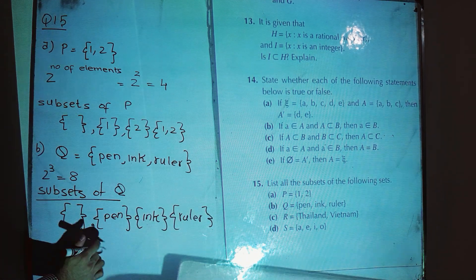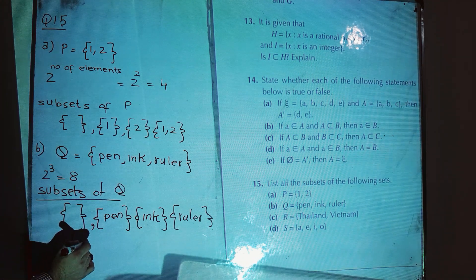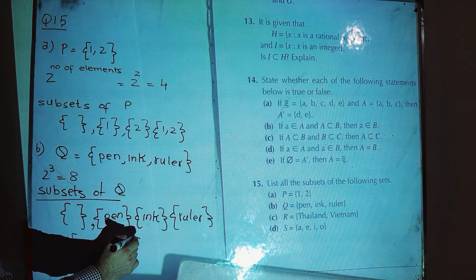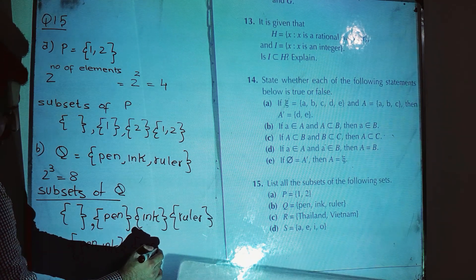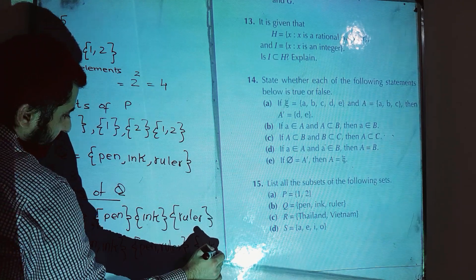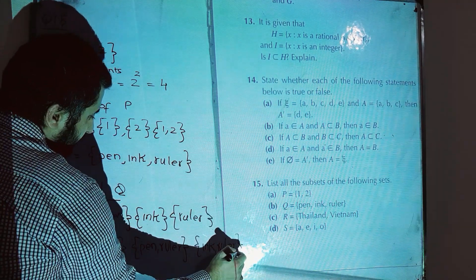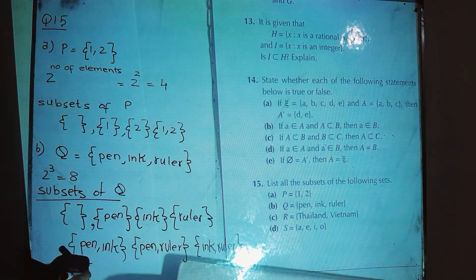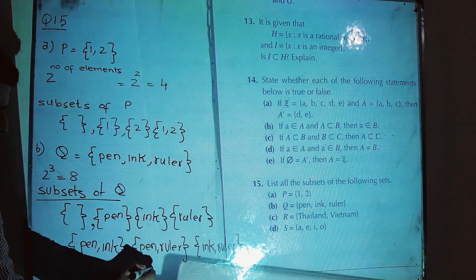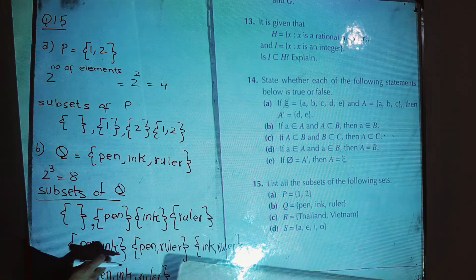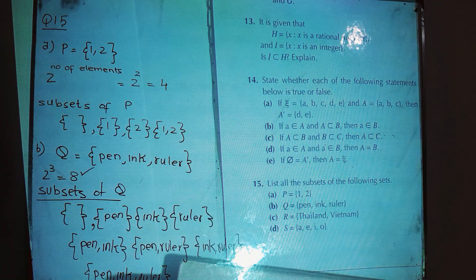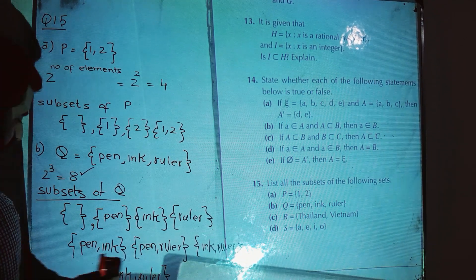Now write down the subsets with two elements — you are not going to repeat the same combination: {pen, ink}, then {pen, ruler}, and then {ink, ruler}. Then write down the subset with three elements: {pen, ink, ruler}. Count them: one, two, three, four, five, six, seven, eight. So we have eight subsets for this set.